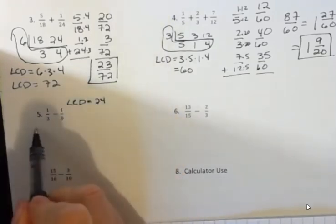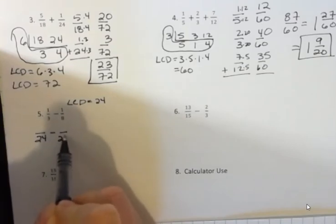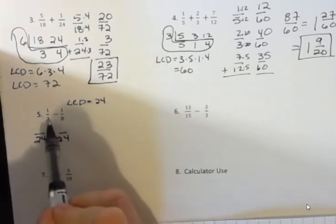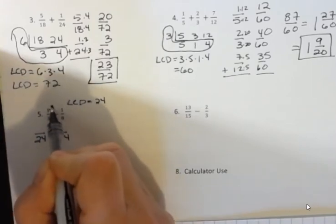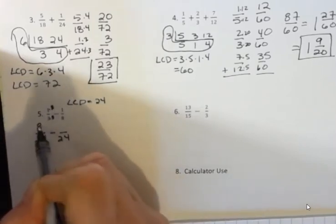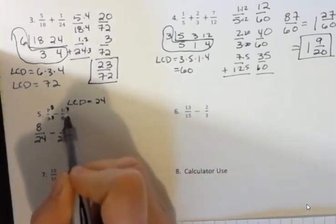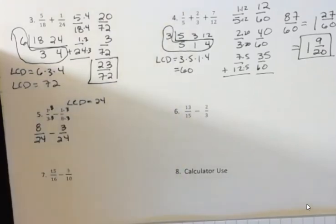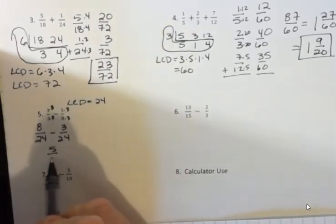So if I want to rewrite one third with 24ths because my LCD equals 24, I could just say I'm going to write this over 24 and then I'm going to write the second one over 24. What 3 times what gives you 24? Well that's 3 times 8, so 1 times 8 is 8 24ths. And 8 times 3 is 24, so 1 times 3 is 3. And now I would subtract those 8 minus 3 would be 5 over 24.